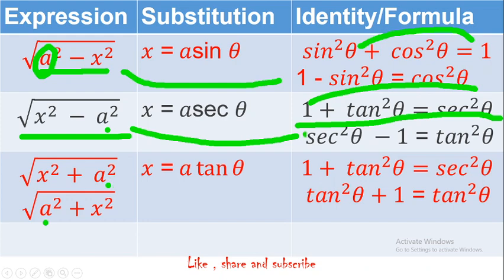What about x² + a²? The formula is the same — we directly use 1 + tan²θ = sec²θ, comparing the expression with this identity. So the substitution for x² + a² is x = a tanθ. The main meaning of substitutions is to change the expression with respect to some trigonometric identity. And since addition is commutative, x² + a² or a² + x² does not change anything.